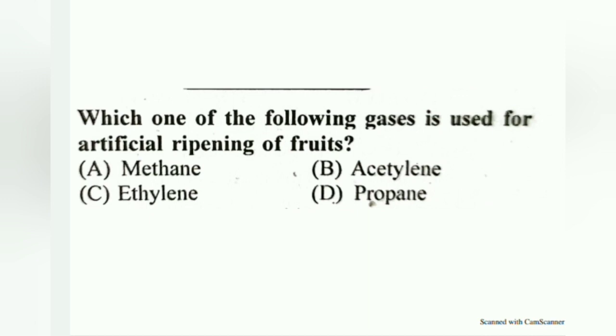Which one of the following gases is used for artificial ripening of fruits? The answer is acetylene.